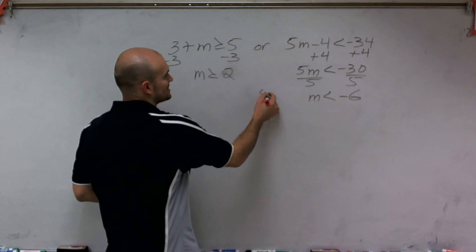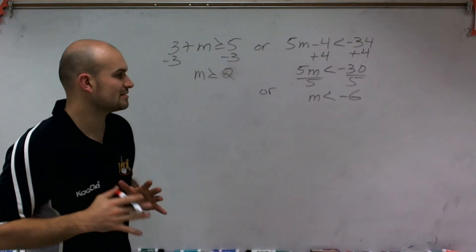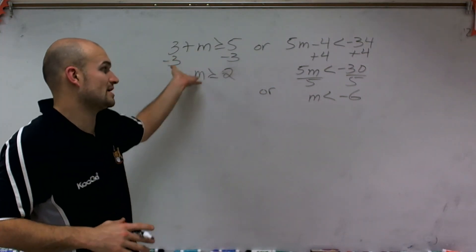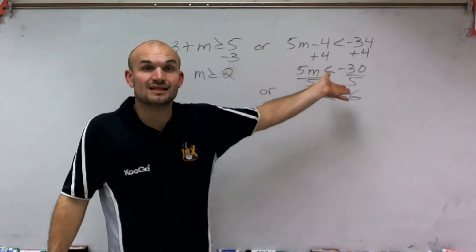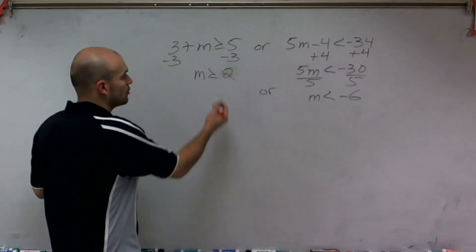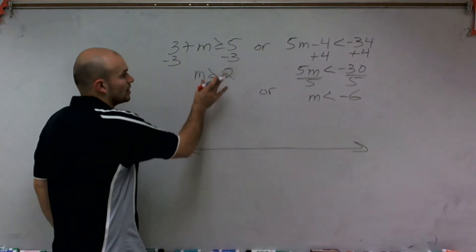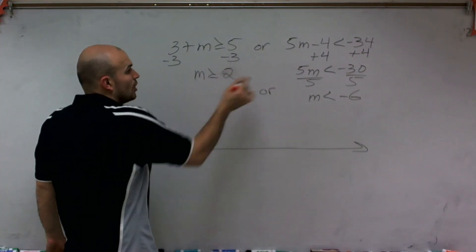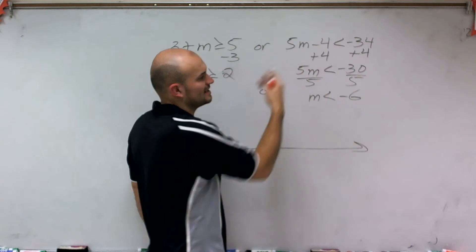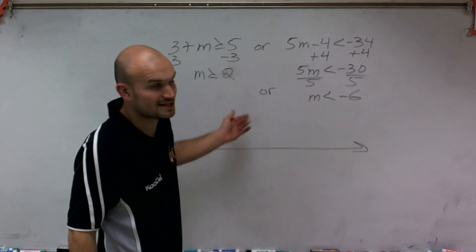So therefore, my two statements are: all values that are going to be true if I have a value that's greater than 2, or a value that's less than negative 6, or greater than or equal to 2. So first of all, we know that our inequality can be true if it's equal to 2, or... I'm sorry, not equal to negative 6. Just has to be less than negative 6.